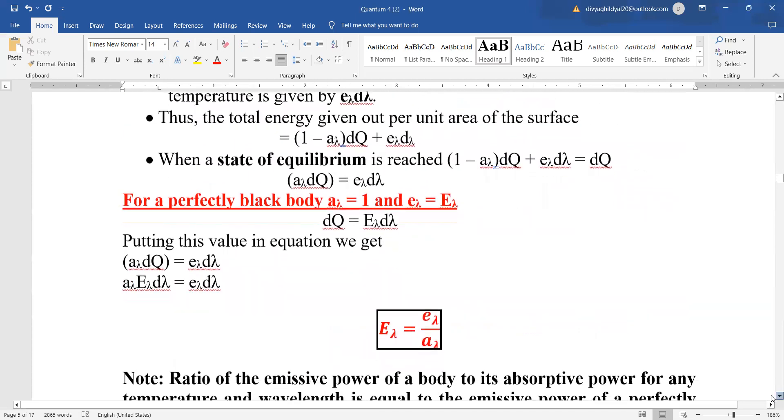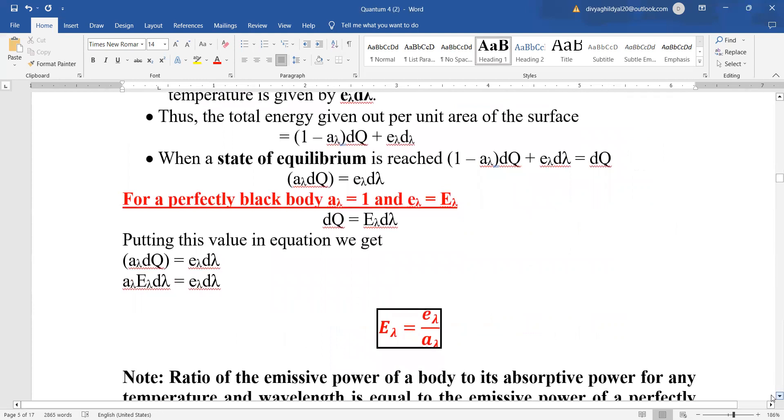Total energy given out per unit area of the surface will be equal to (1 - a_λ)dQ + e_λ dλ. At the state of equilibrium, this total energy will be equal to the energy given out per unit area.